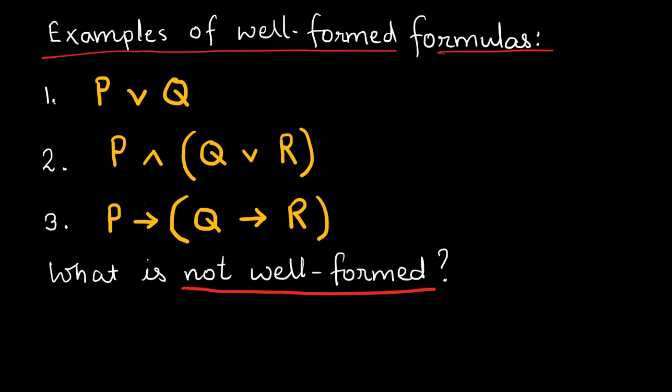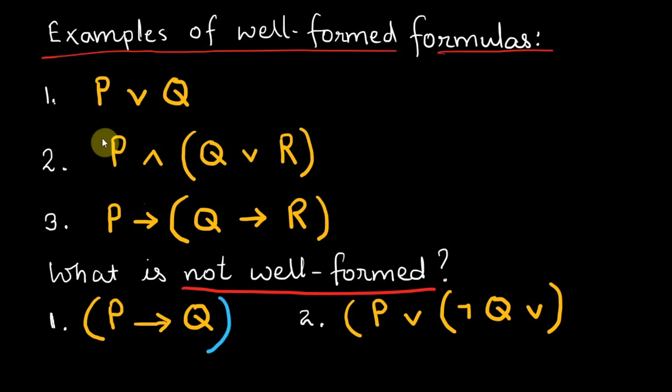(P implies Q) and (P or (not Q or)) are not well-formed formulas because either a variable is missing or the parentheses are incorrect. Note that in the first example, outer parentheses is not necessary, but if you introduce it, you must use it properly, otherwise it is not well-formed. In the second example, you are missing a variable as well as outer parentheses.